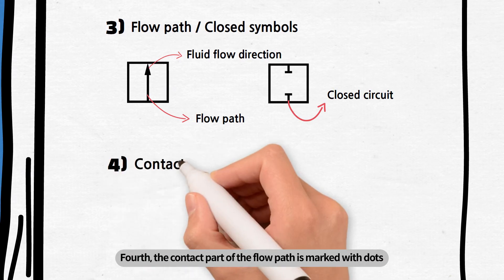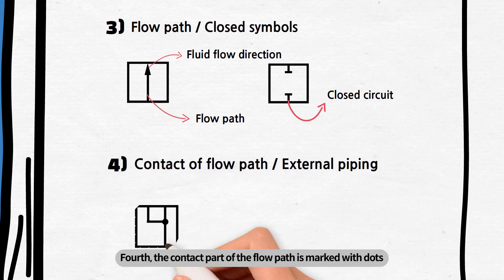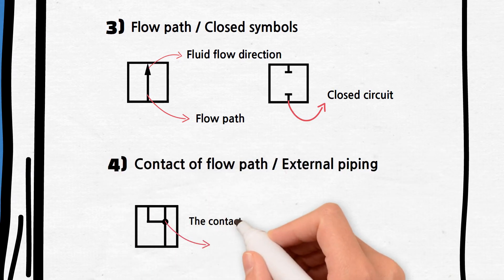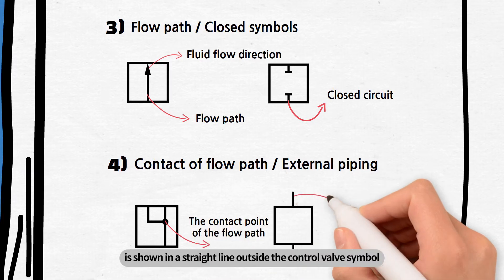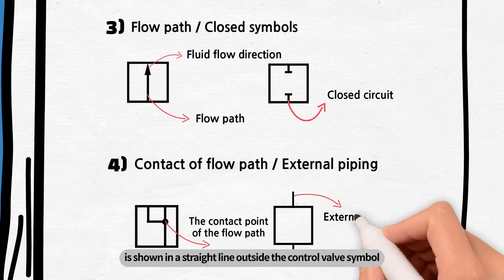Fourth, the contact part of the flow path is marked with dots. And the external piping connected to the valve is shown in a straight line outside the control valve symbol.